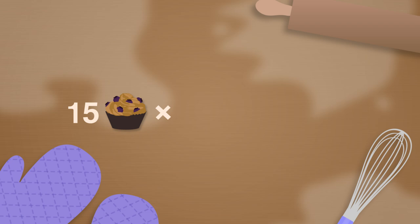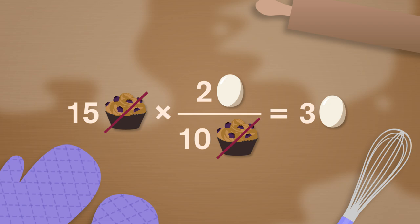So 15 muffins times our ratio, 2 eggs over 10 muffins, then we can cancel out muffins to get our answer of 3 eggs.